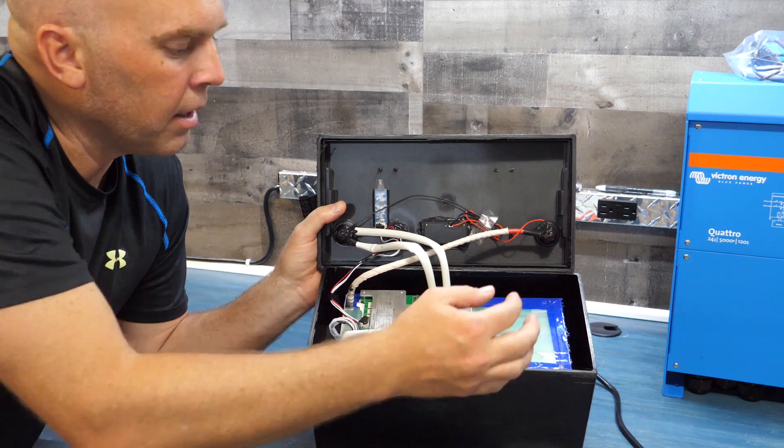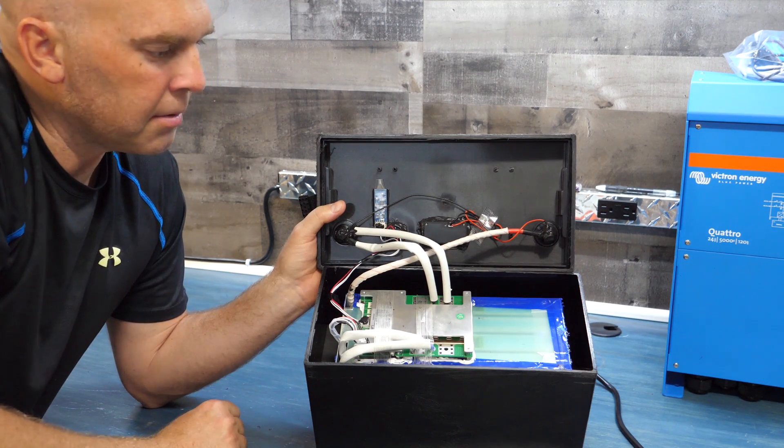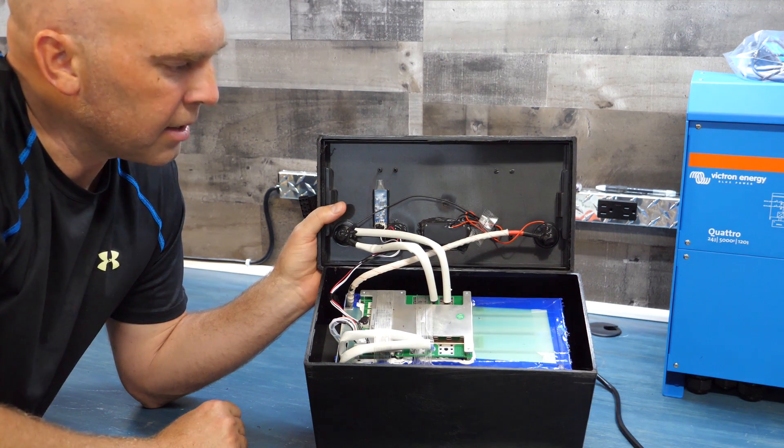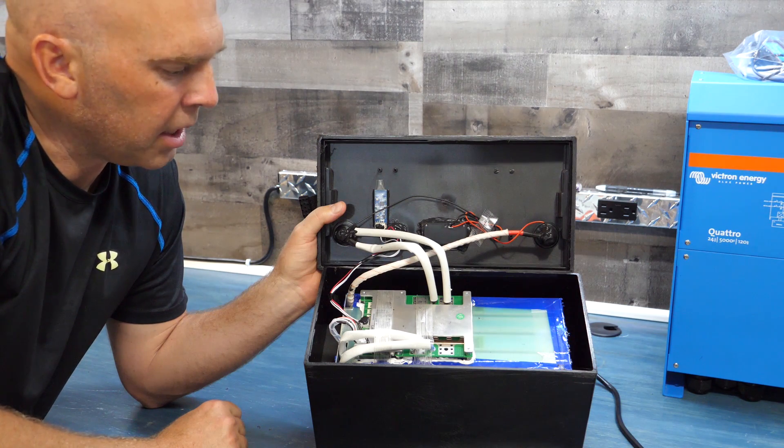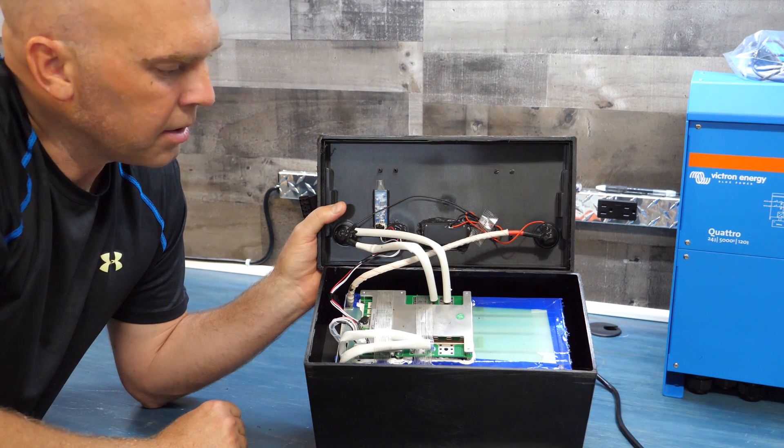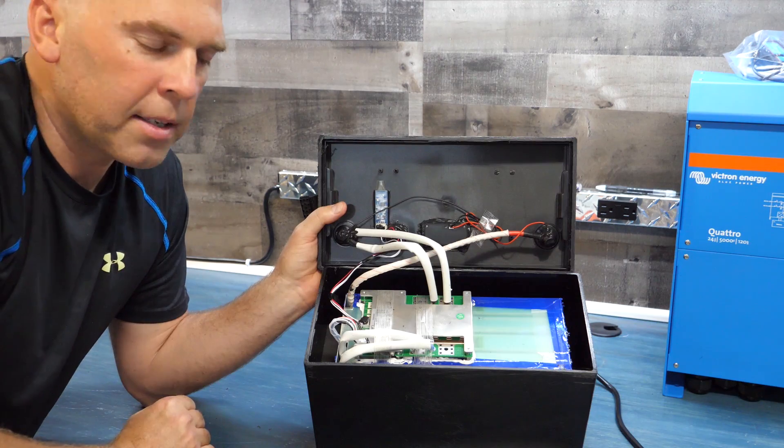There's also a temperature probe that goes down inside with the balance leads. So yeah, we got that one out. It's also adhesive stripped to the bottom, so I will do my best to try to get this out. I'll probably have to get a heat gun and we'll get this thing out of here, then we'll lay down the front and see what we got inside.